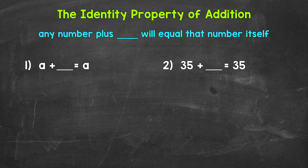As far as the identity property of addition, we need to think: what can we add to any number so that number will equal itself? Well, any number plus zero will equal that number itself, and it's as simple as that.